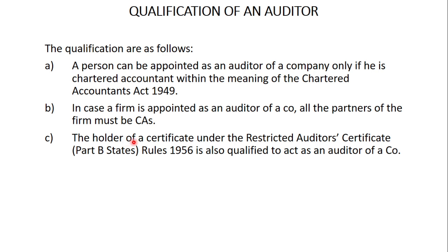The third qualification: the holder of a certificate under the Restricted Auditors Certificate (Part B States) Rules, 1956 is also qualified to act as an auditor of a company. A person holding a certificate under the Restricted Auditors Certificate Rules, 1956 can also be appointed as an auditor of a company.